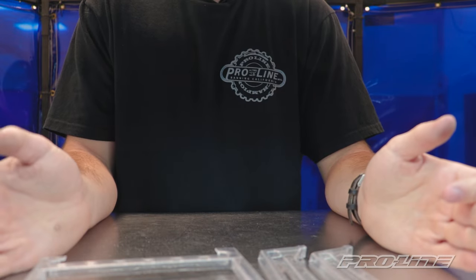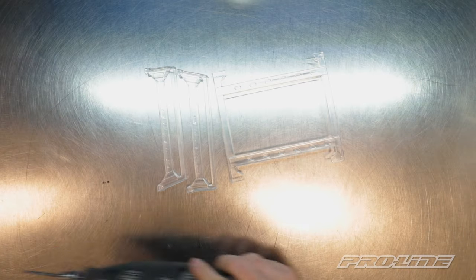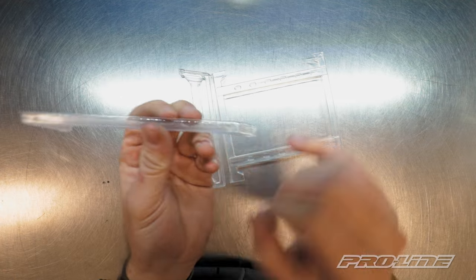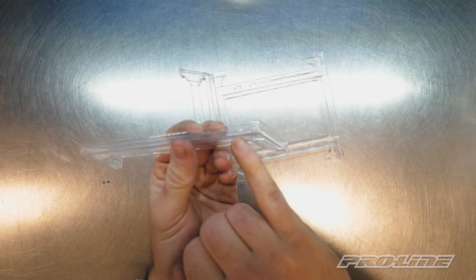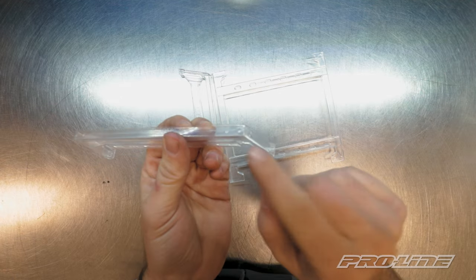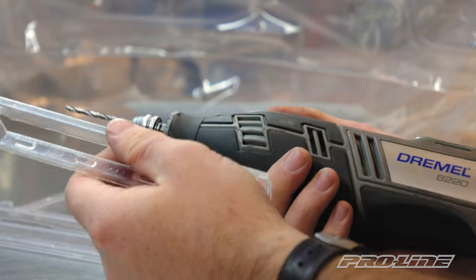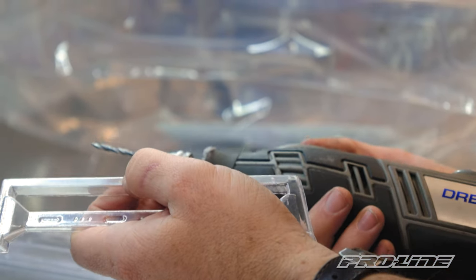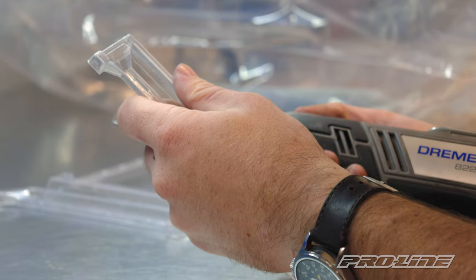So now we're going to move on to drilling the holes. When drilling the holes, we're just going to look for these little indents in the Lexan. That's going to tell us where we're going to be drilling these holes. So just for the sake of time, we're going to use a rotary tool to knock these holes out, but you can also use a body reamer to punch the holes through.